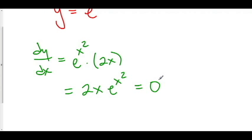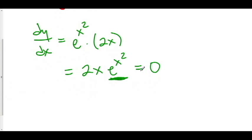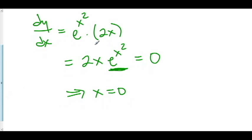Let's set this equal to 0. Now, e to the x squared is never going to equal 0 — the only way to make e to the stuff equal 0 is to let the stuff approach negative infinity, which makes no sense here. So e to the x squared is always positive. However, 2x equals 0 when x equals 0. So the only time dy/dx equals 0 is when x equals 0, and this is the point where we'll do our line analysis.